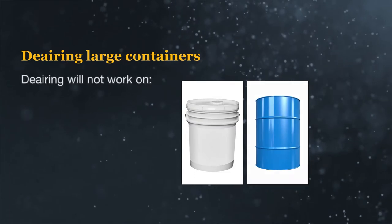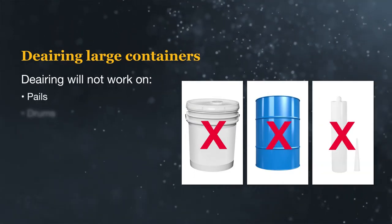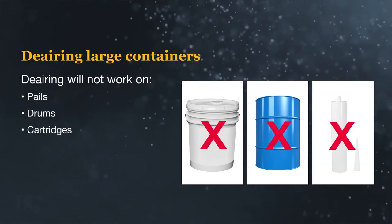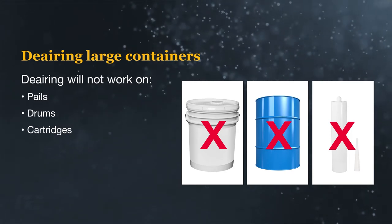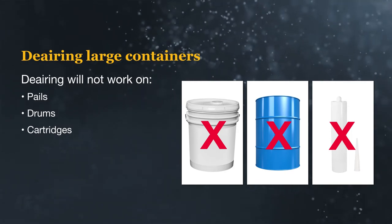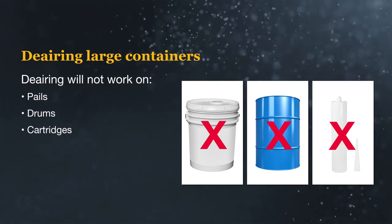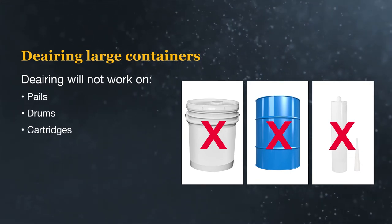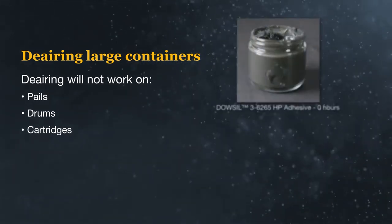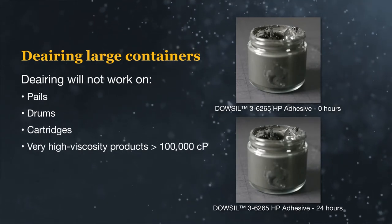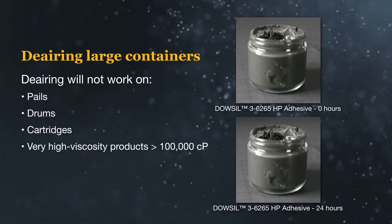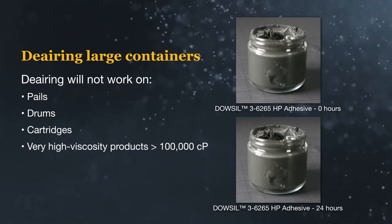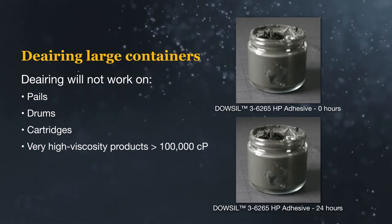De-airing large containers like pails, drums, or cartridges has limitations as well. Attempting to de-air these large package sizes, even for long periods of time, will be ineffective and will only de-air the top layer of the product. This is also the case for very high viscosity, non-flow, and non-slump products. The viscosity of those products is too high to enable de-airing.